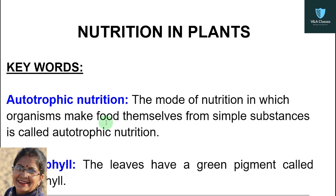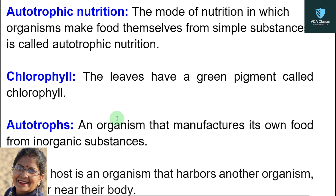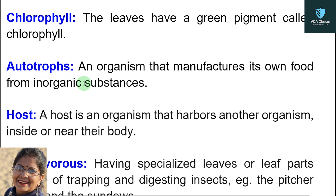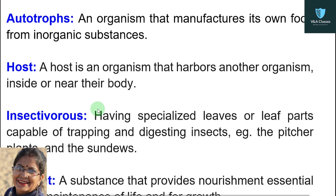Second keyword: chlorophyll. The leaves have a green pigment called chlorophyll. Next: autotrophs. An organism that manufactures its own food from inorganic substances is known as autotrophs.